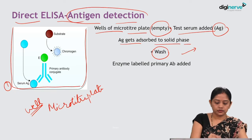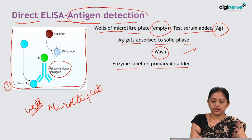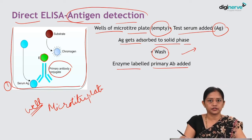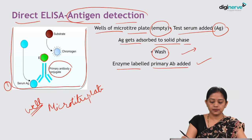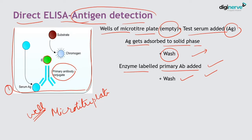In the next step, a primary antibody conjugated with an enzyme is added — you can see the enzyme-labeled primary antibody added into the reaction well. After this, a wash step follows, where any primary antibody that has not bound to the antigen present in the test serum gets washed away.